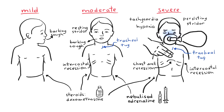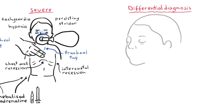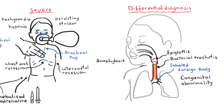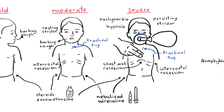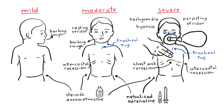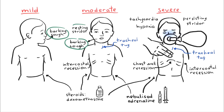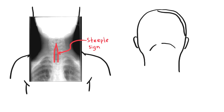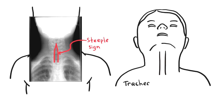It is important to monitor children with croup. If there is no improvement, consider an alternative diagnosis. Differential diagnoses for croup include an inhaled foreign body, congenital abnormalities, epiglottitis, bacterial tracheitis, and even anaphylaxis. Croup is a clinical diagnosis; essentials for diagnosis are gradual onset of symptoms, barking cough, and stridor. Rarely are investigations warranted, but if an X-ray is performed there is the steeple sign — a radiological sign on a frontal neck radiograph where subglottic tracheal narrowing produces the shape of a church steeple within the trachea itself.